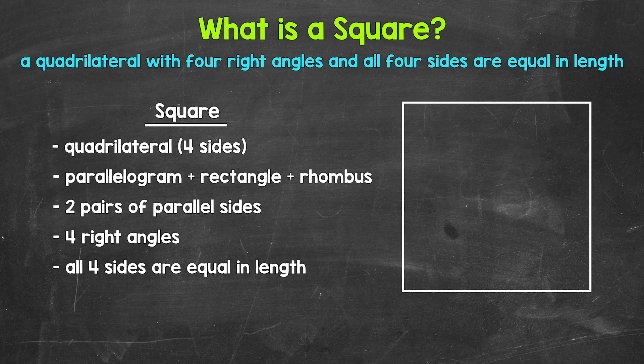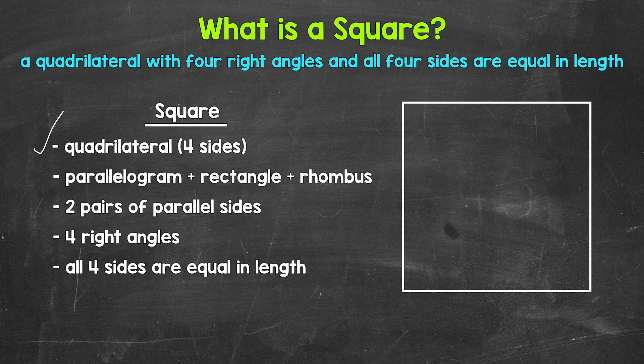We will start with a square being a quadrilateral. So squares have four sides. Now squares are much more specific than that though. Squares are kind of like a combination of parallelograms, rectangles, and rhombuses. Squares combine features from all of those quadrilaterals.